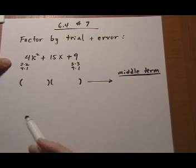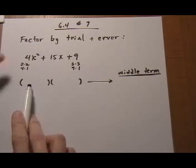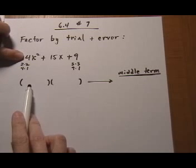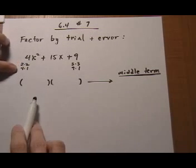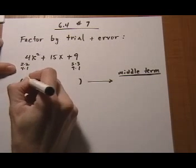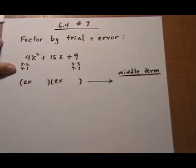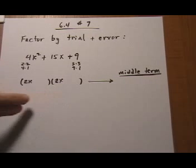So in order to narrow down some of our choices, we're going to look at what are the factors of the first term, 4x². So we have 2x times 2x or 4x times x are the possibilities. So we're either going to start off our binomial with 2x times 2x or 4x times x.